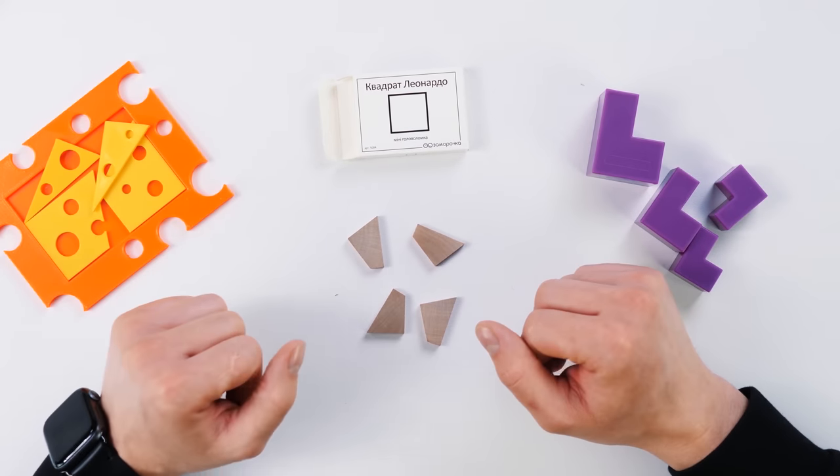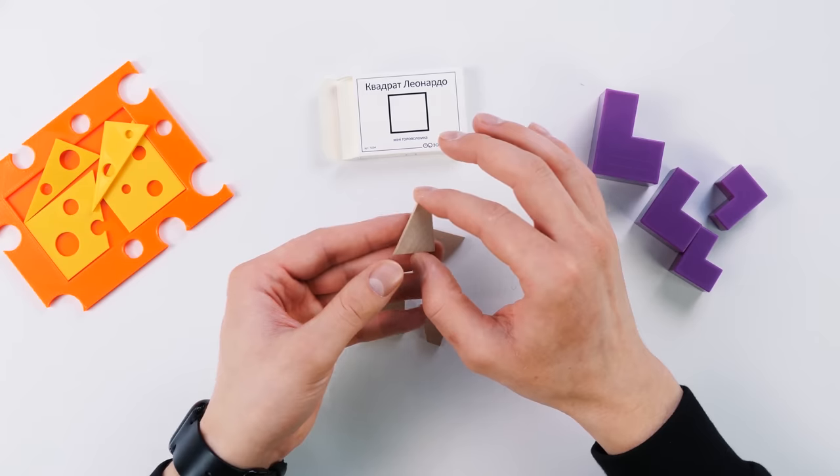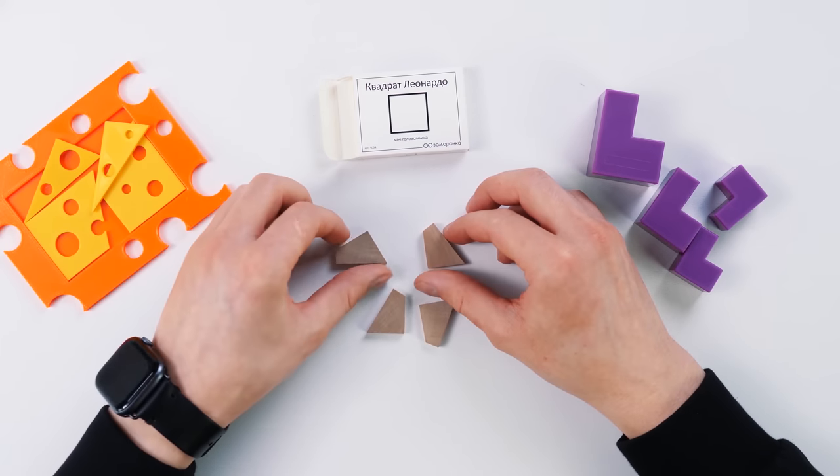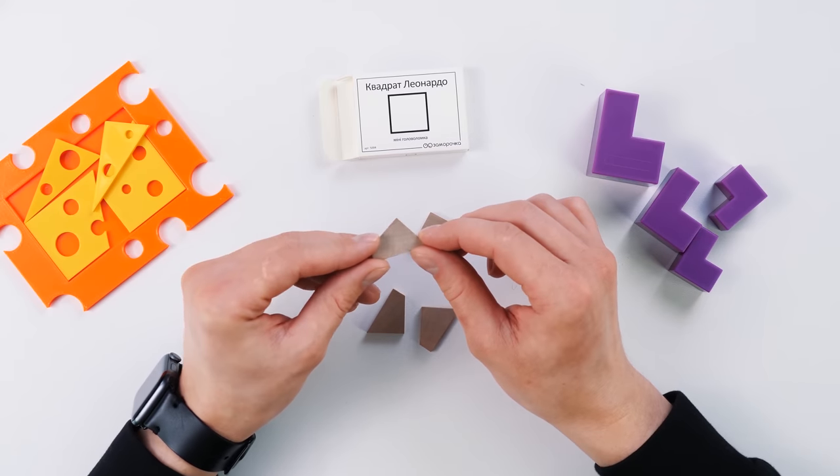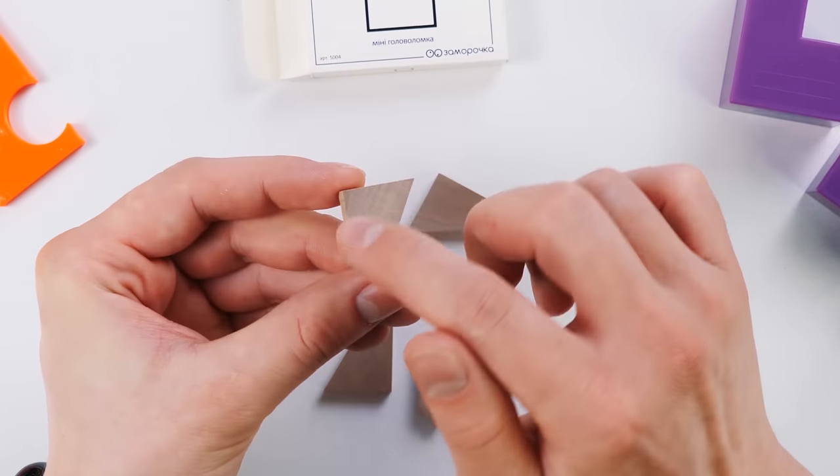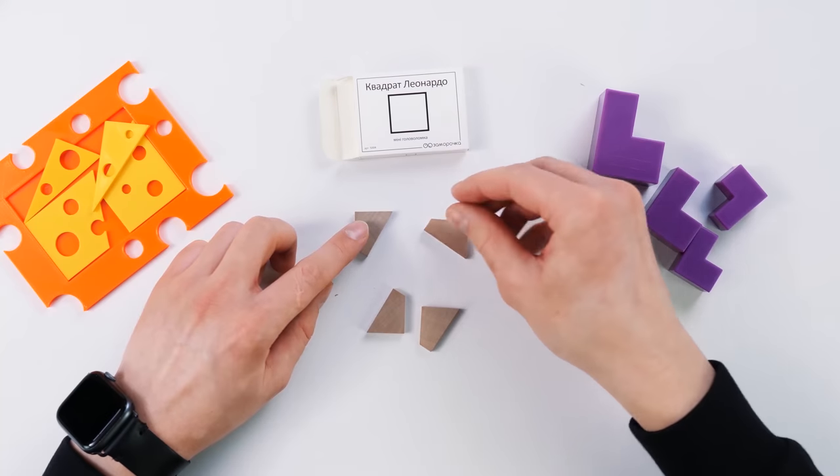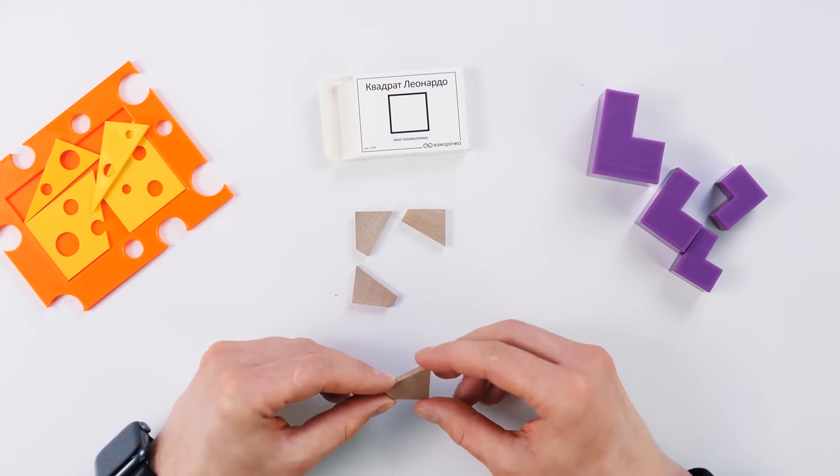But you should already know, if you are watching my videos, that if we have the same details, it's likely that they need to be mirrored. And here we have four identical parts. Let's try to make a square out of this stuff. I think it won't take much time. And the first thing I want to try is to find right angles. Each part has a right angle. If we put these right-angled corners in the corners of a square, we have this shape.